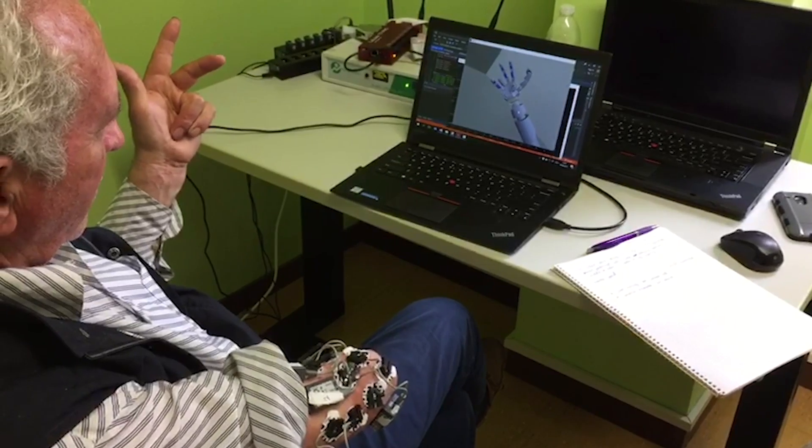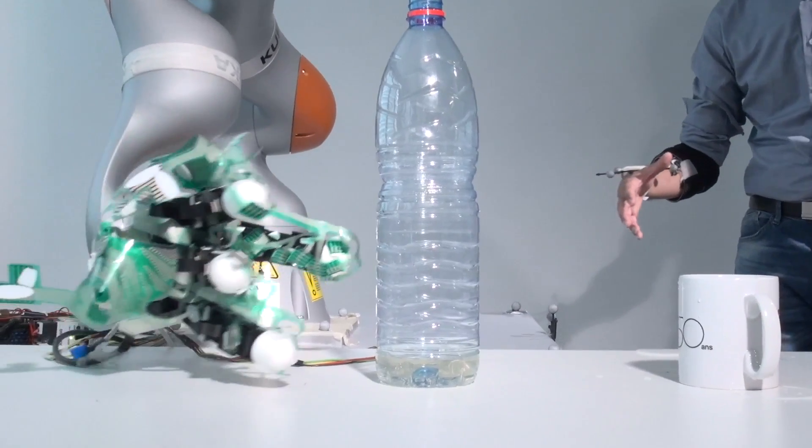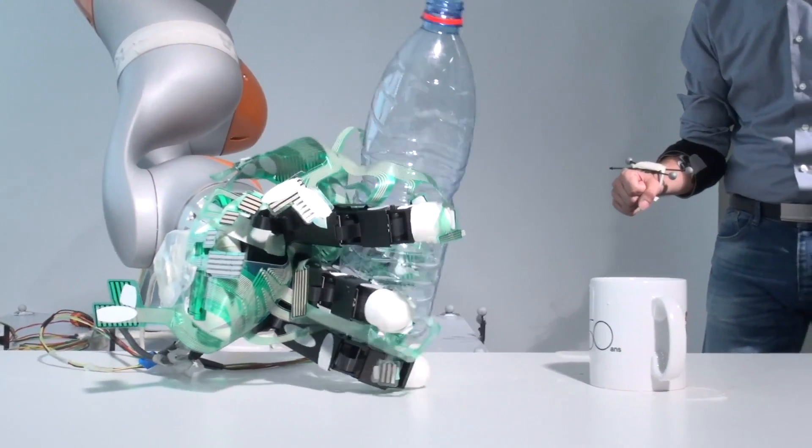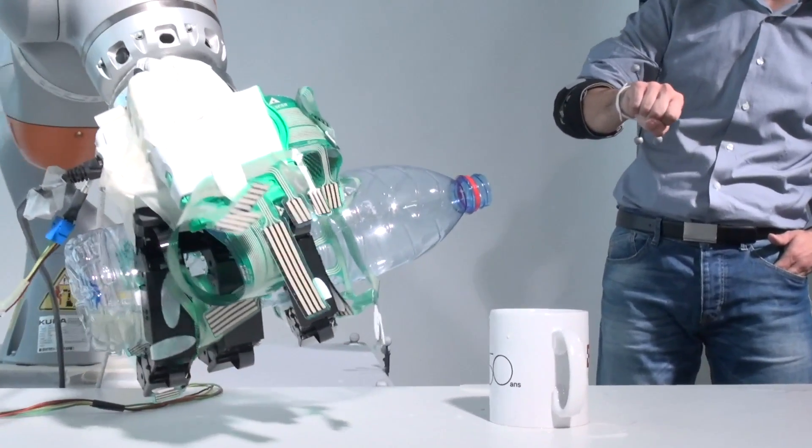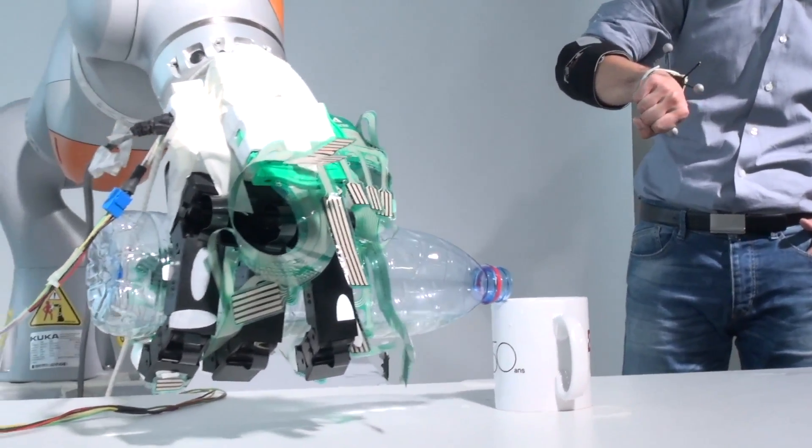On top of that, because these predictions of the finger movements may not be 100% accurate, we have this robotic automation which allows the hand to automatically start closing around an object once contact is made.